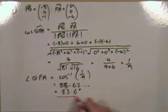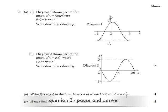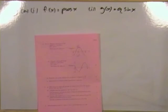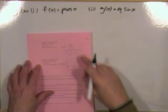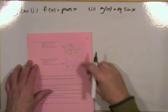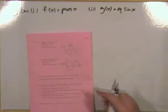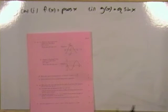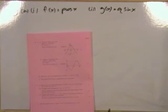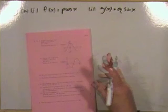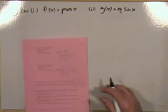And there you go — question 2 done. Number 3: some trig graphs — a cosine graph and a sine graph. Wave function question, 8 marks.